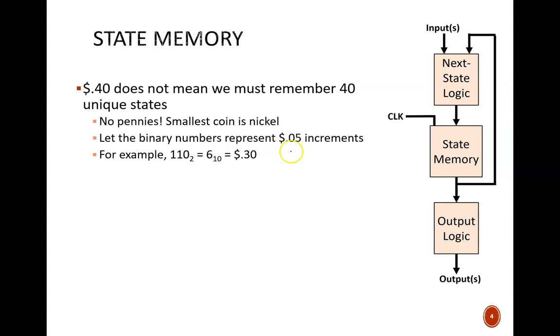For example, if the memory reads 110 in binary, that would equal 6 in decimal, or 30 cents in our machine. Note the multiple layers of abstraction contained in this single statement. Logic values are being translated as 30 cents.